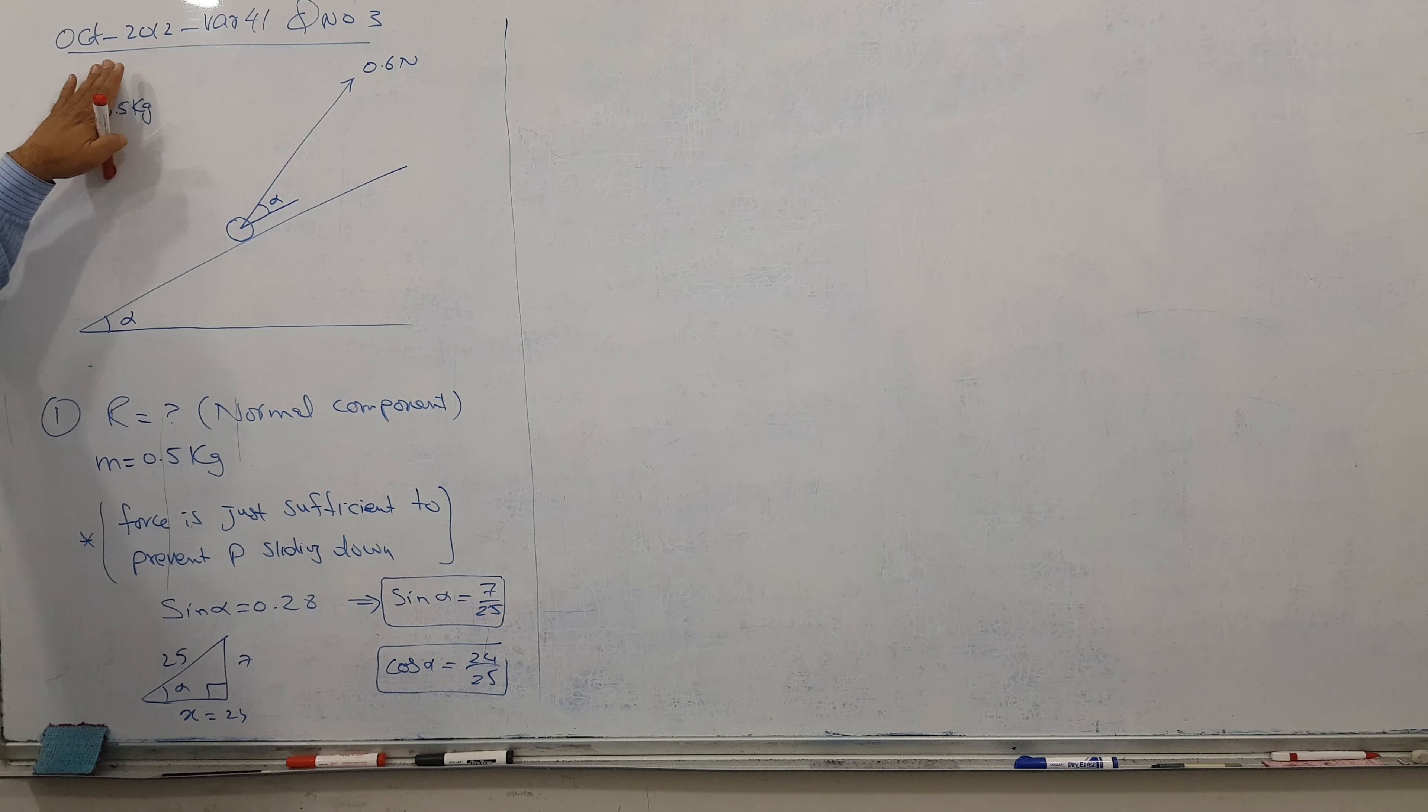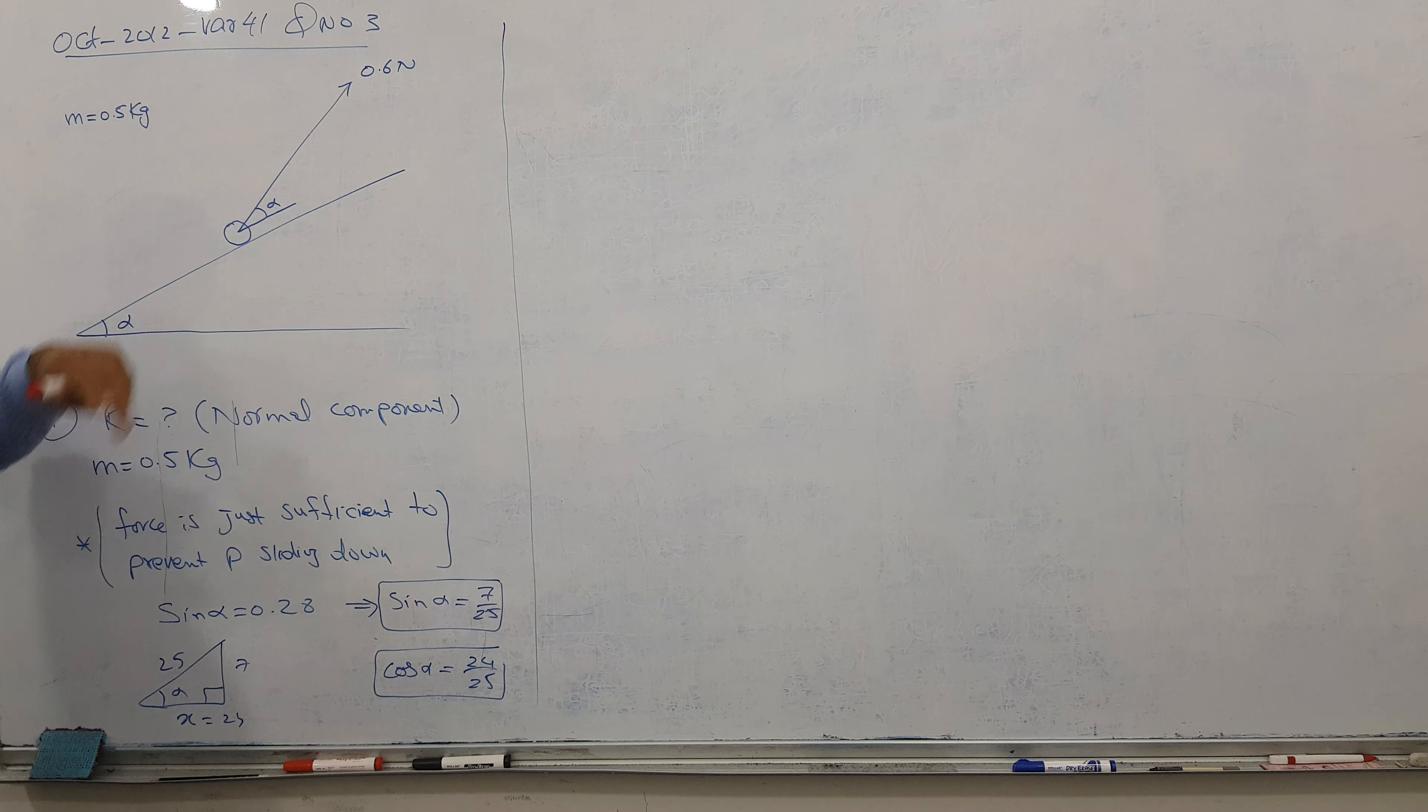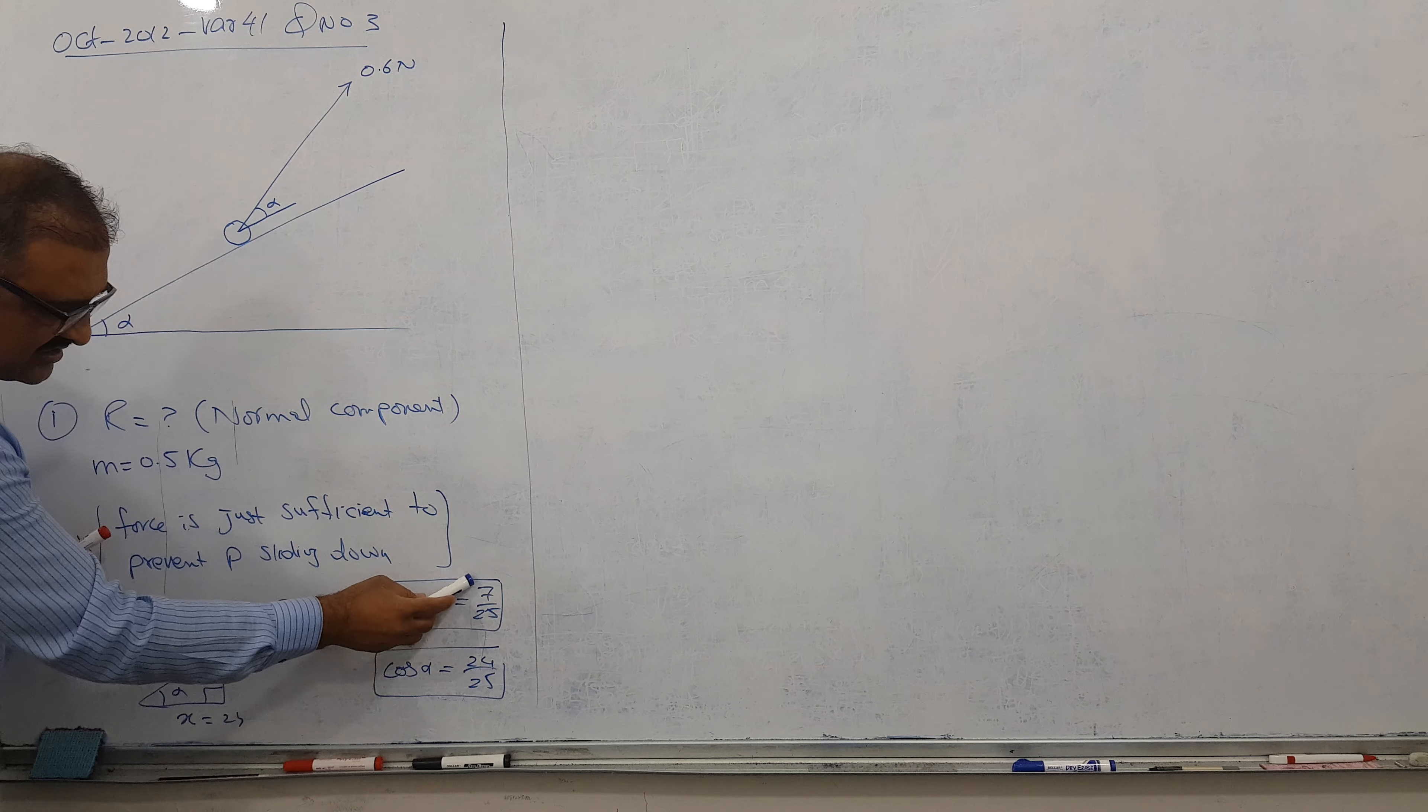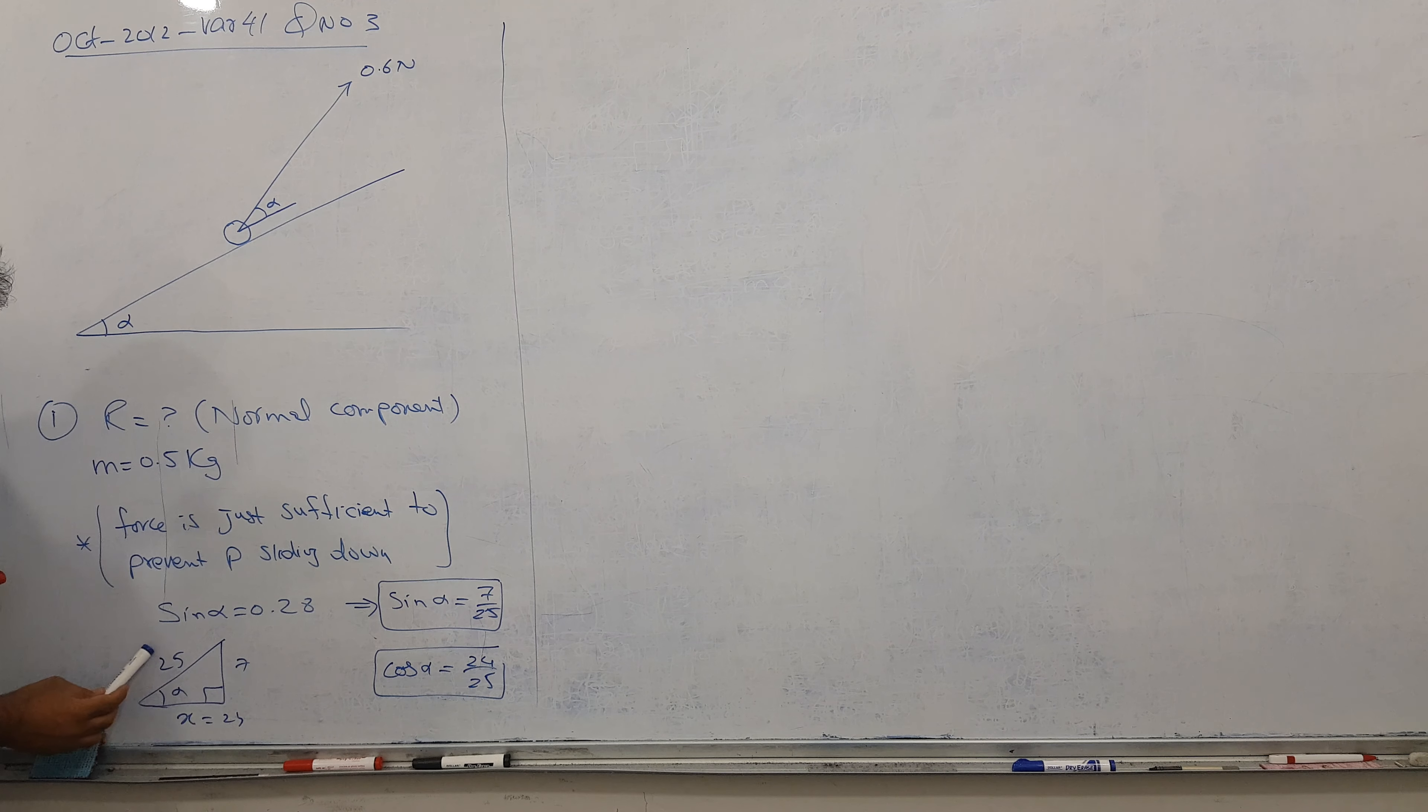As-salamu alaykum. October 12, question number 3 of topic inequal law. We have given here the situation where angle alpha and sine alpha equal to 0.28, which I can note in fraction as 7 by 25. So it's opposite by hypotenuse. I used Pythagoras theorem and I got this X.